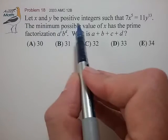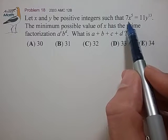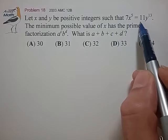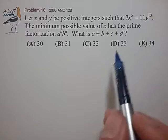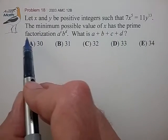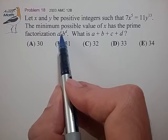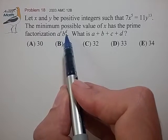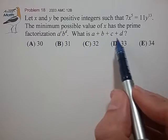Let x and y be positive integers such that 7x^5 = 11y^13. The minimum possible value of x has the prime factorization a^c × b^d. What is a + b + c + d?